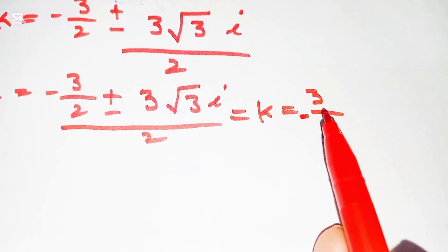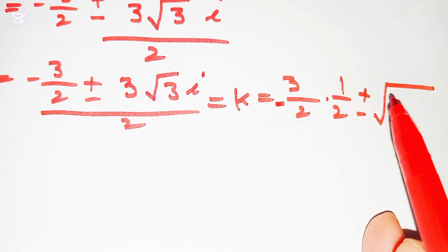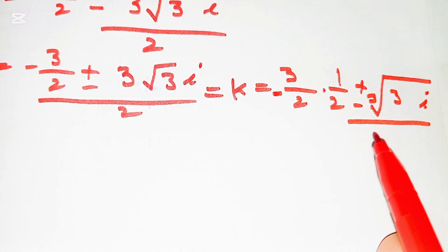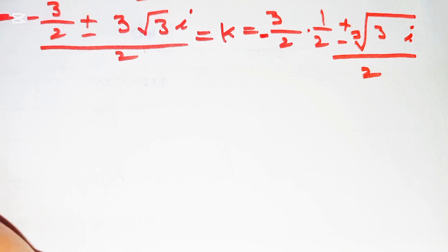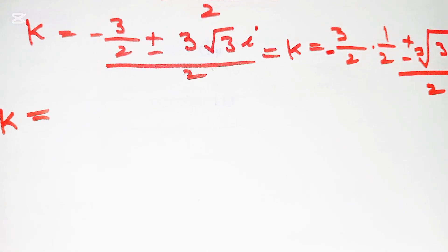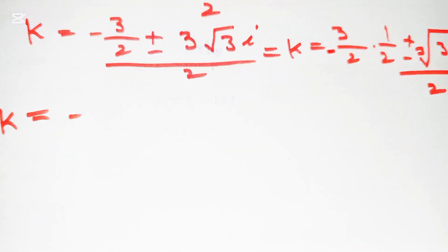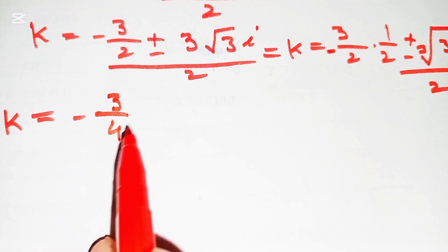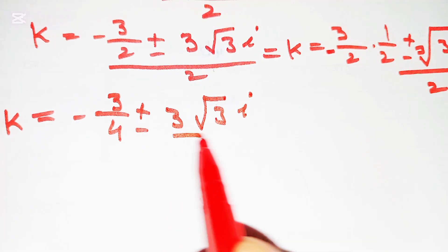So k = (−3/2 ± (√3·i)/2) / 2. Simplifying by multiplying −3/2 by 1/2 gives −3/4, and the imaginary part is ±3√3·i/4.